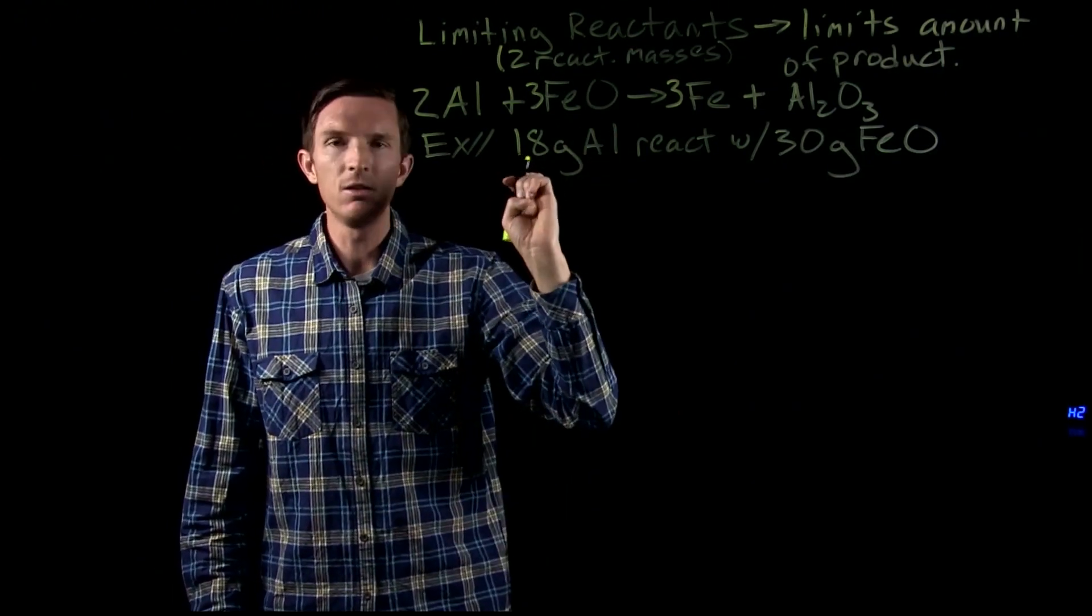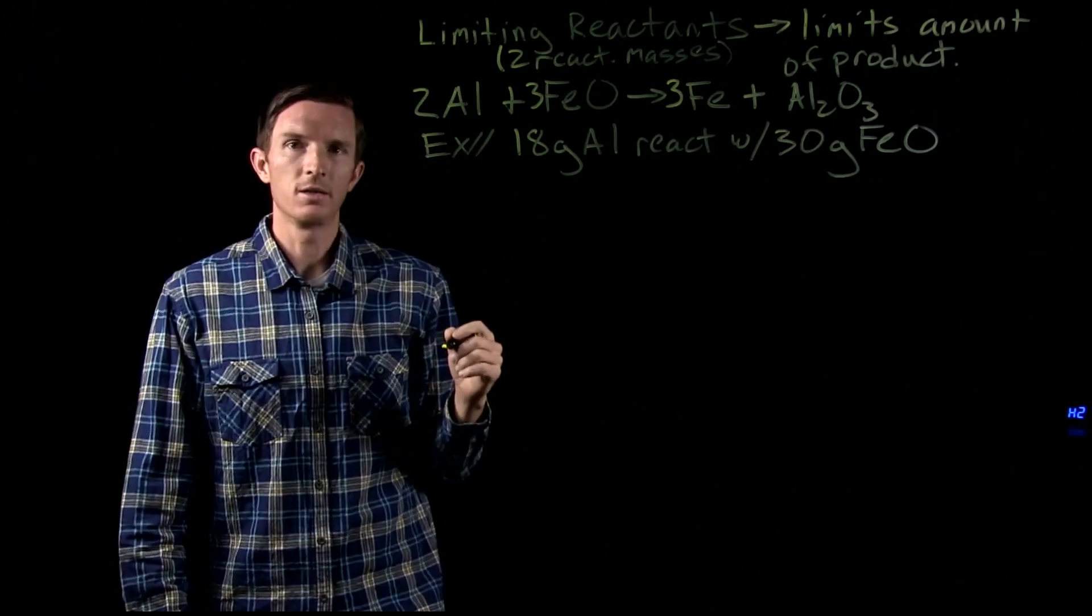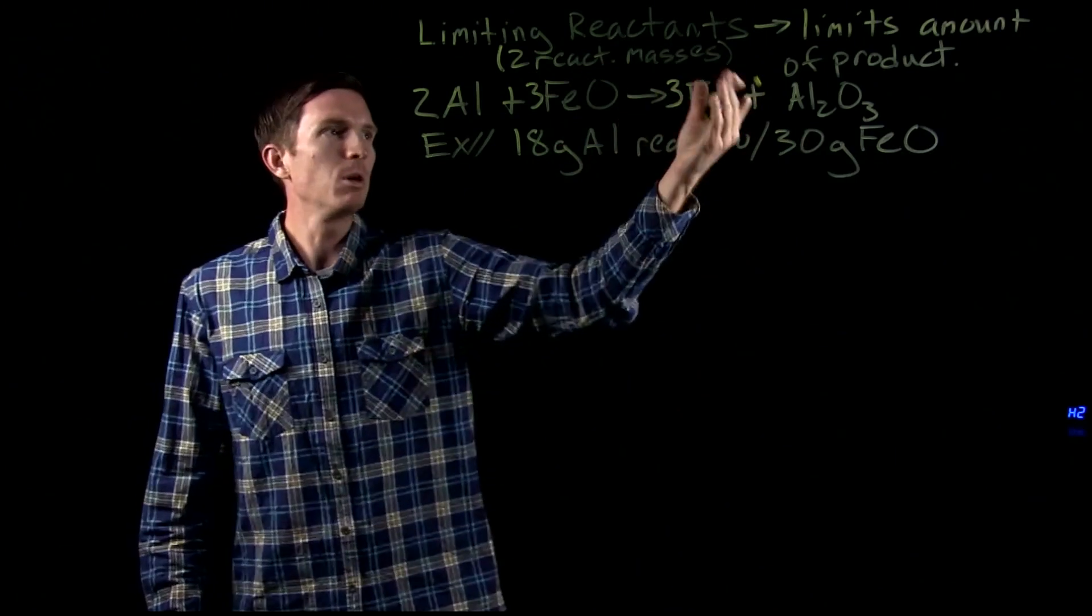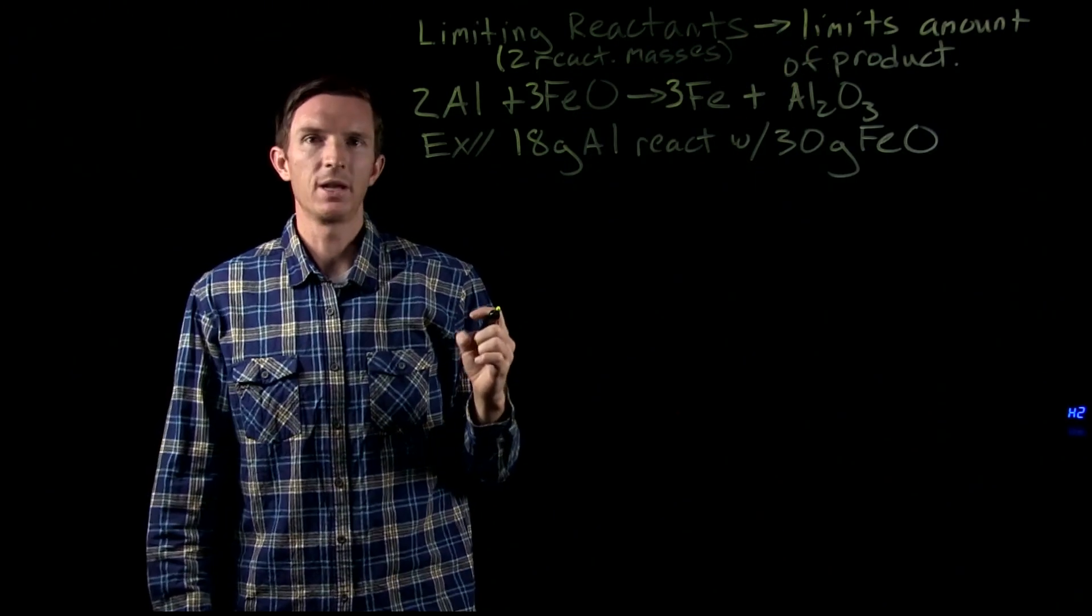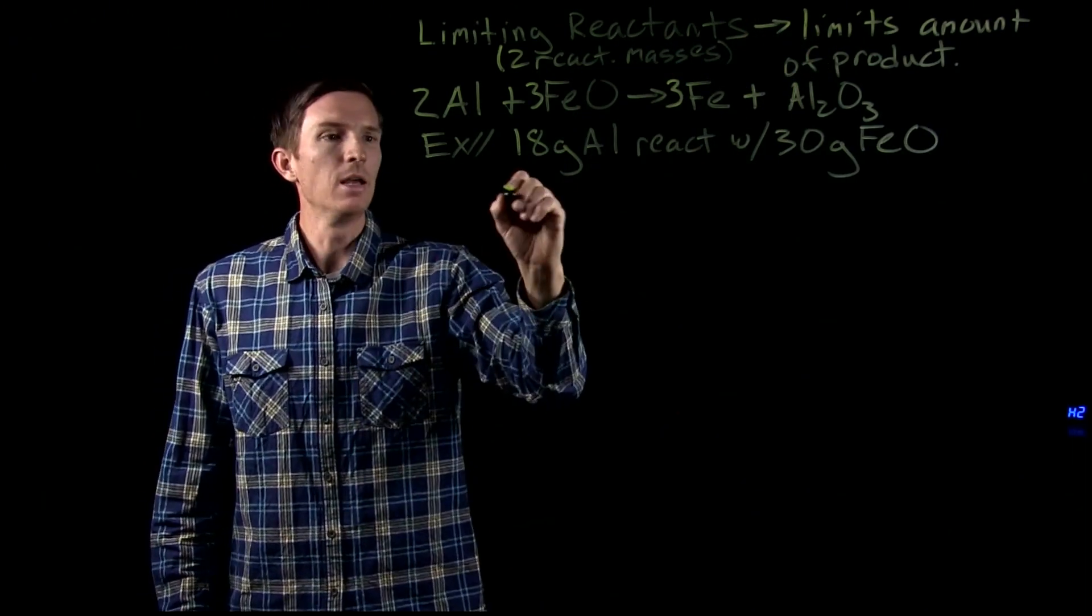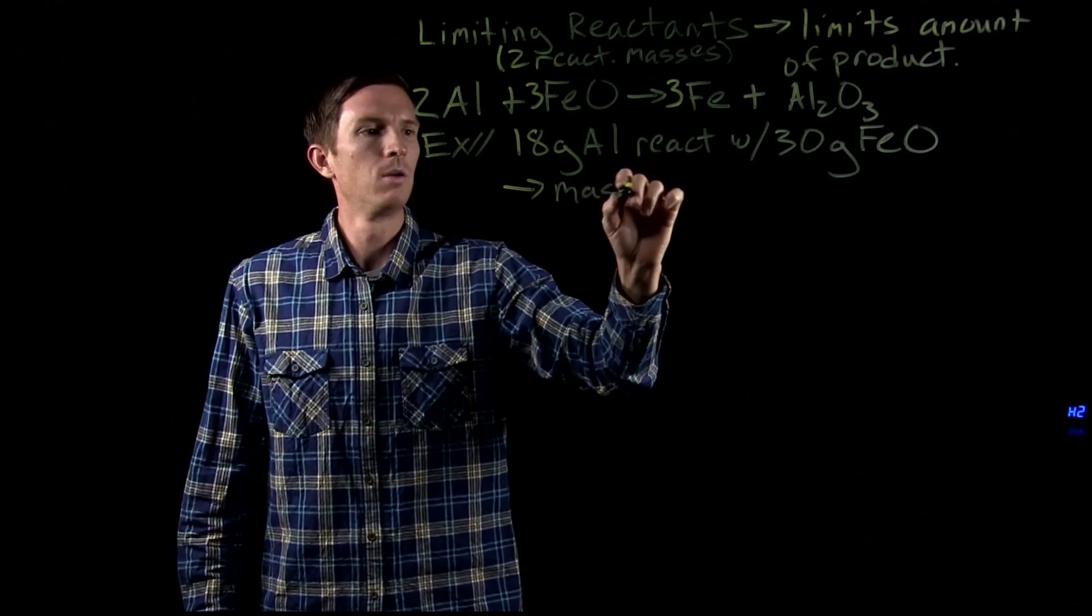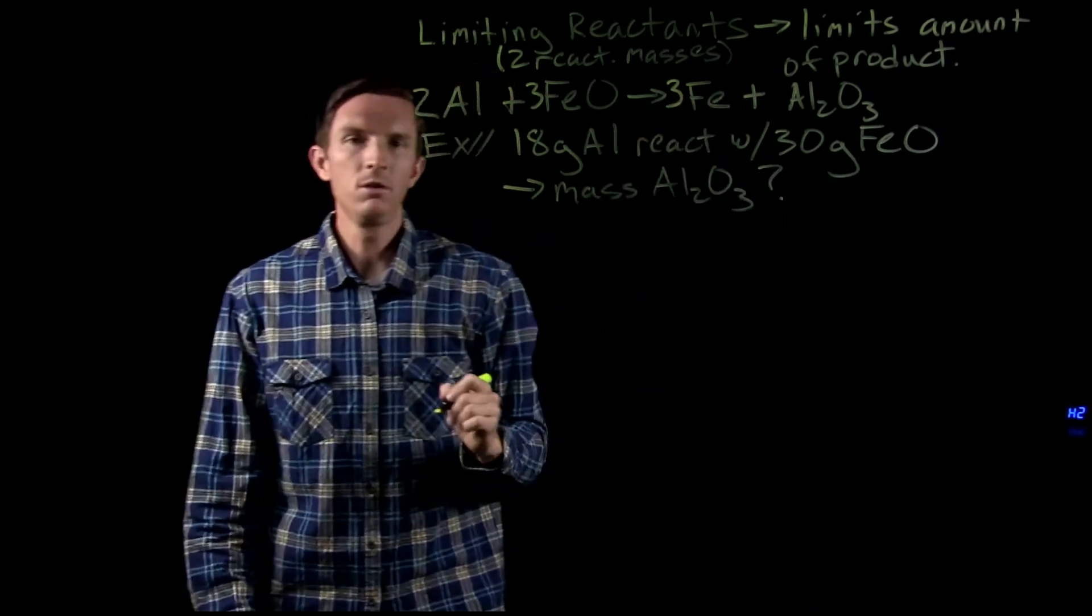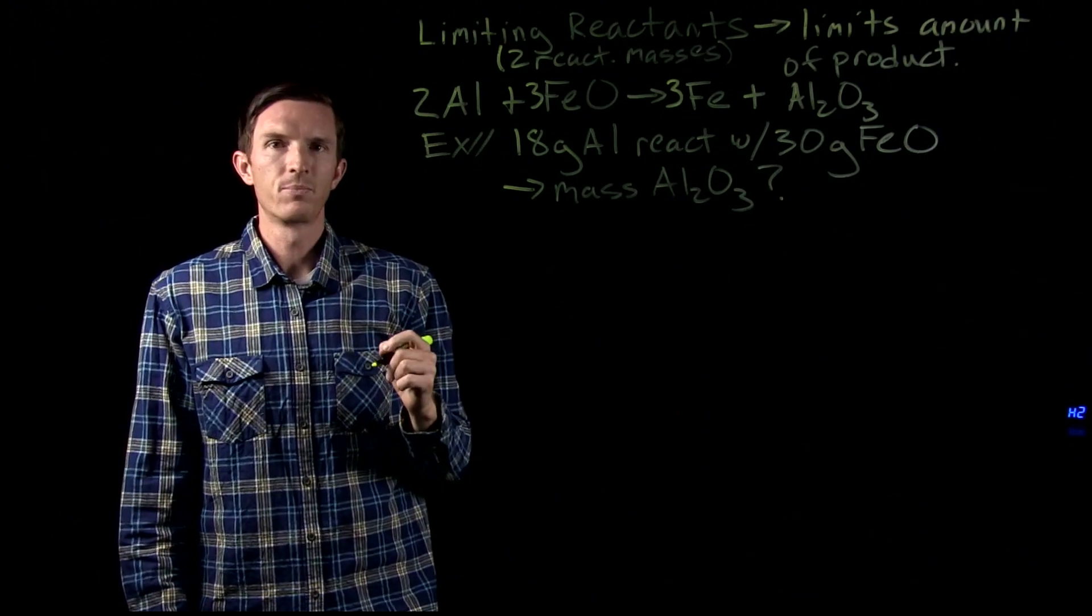So we have the mass of reactant A, aluminum, and reactant B, iron oxide. So what we need to do is we need to figure out which of these two is going to limit how much of the product we're going to get. And what we're trying to find out is the mass of aluminum oxide that will be formed.